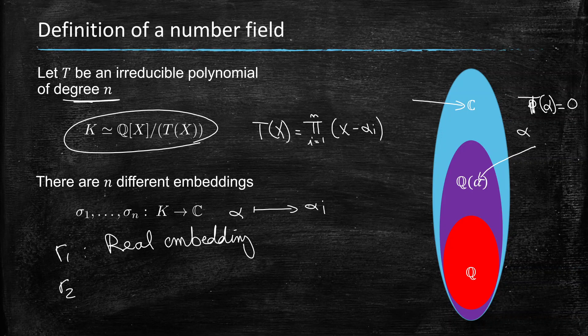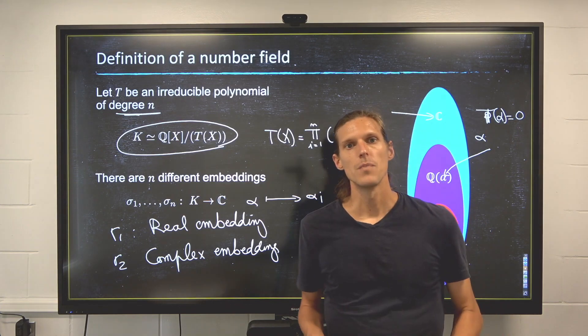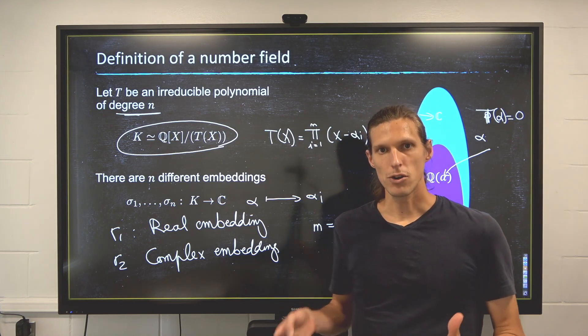And r2 pairs of complex embeddings, so those embeddings where the copy of the field that we're describing is not stuck in R. And then what we have is that n, quite naturally, is r1 plus 2 times r2. So the signature is the pair r1, r2.